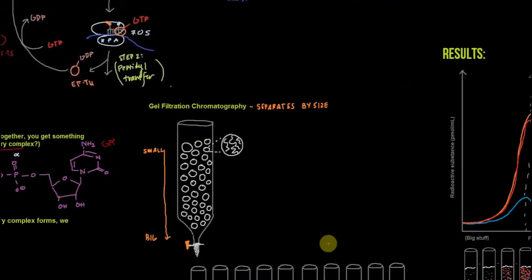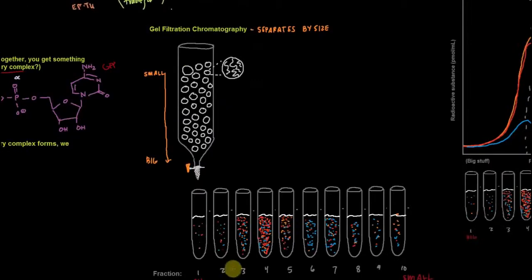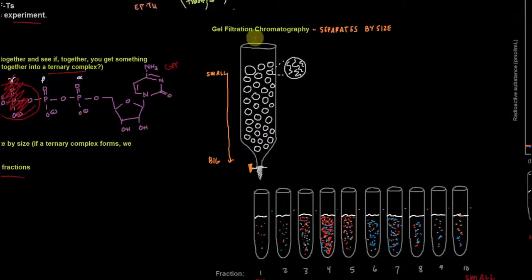So let's talk about gel filtration chromatography. In gel filtration chromatography, we want to separate stuff by size. We have a bunch of beads, and in these beads, we've got a bunch of little crevices. What happens is big stuff will easily move through the gel filtration chromatography column, because it'll just go around all of these beads, and it'll come out the bottom relatively quickly.